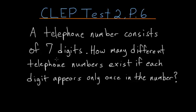A telephone number consists of seven digits. How many different telephone numbers exist if each digit appears only once in the number?